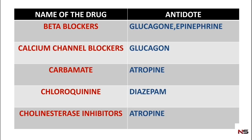For beta blockers, the antidotes used are glucagon and epinephrine. For calcium channel blockers, glucagon is used as an antidote. For carbamate poisoning, atropine is used. For chloroquine poisoning, diazepam is used. For cholinesterase inhibitors, atropine is the antidote.